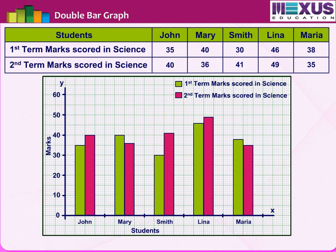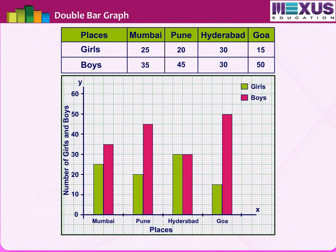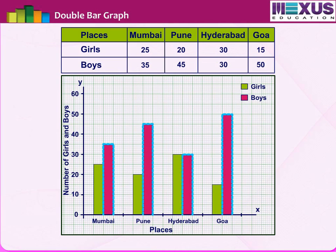While Mary and Maria have lagged a little compared to their previous term. Similarly, such data can be put together in double bar graphs to get much other information. For example, from a double bar graph with data of boys and girls chosen for a science exhibition at state level, we can interpret that the number of boys selected from each city was more than girls, except from Hyderabad, which had an equal number of boys and girls.